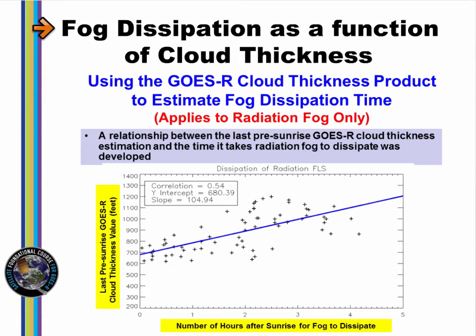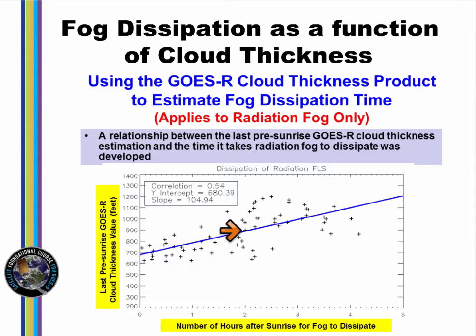This scatter plot shows the relationship between the GOES-R cloud thickness, the last one before sunrise on the y-axis, and dissipation time on the x-axis. The points on this graph were determined by hand for radiation fog only, mostly for cases over the southeast U.S. For example, if the last cloud thickness value before sunrise was at 1145 UTC and it showed a cloud thickness of 900 feet, the best-fit blue line suggests a dissipation time of about two hours later, 1345 UTC. But there is considerable spread to the dissipation time related to the observed thickness of 900 feet, from about 1.3 hours to almost 4.